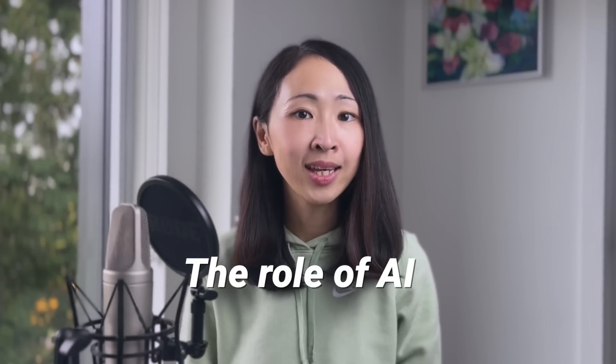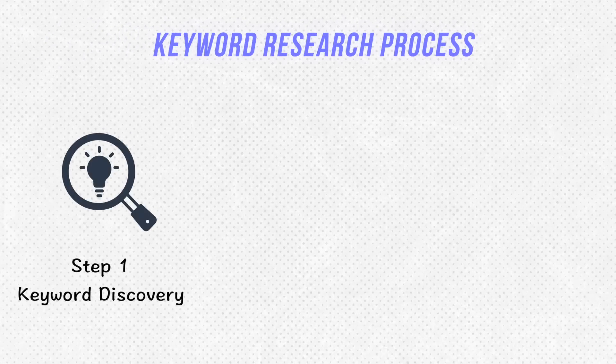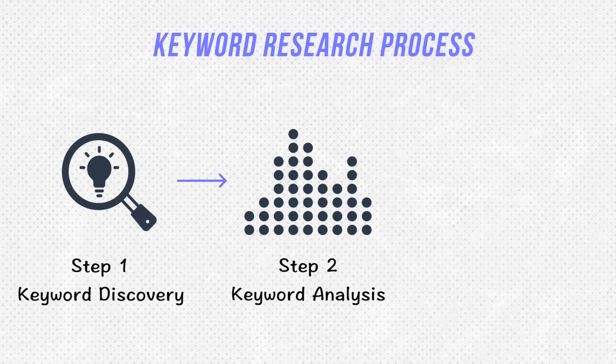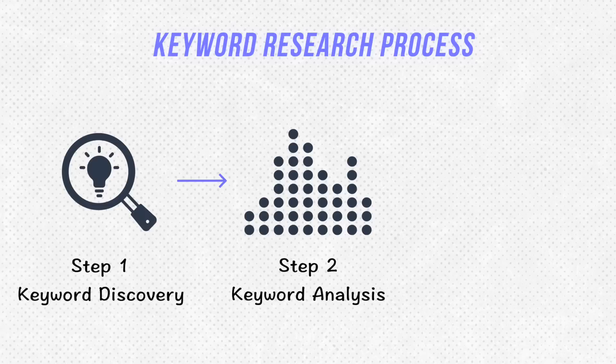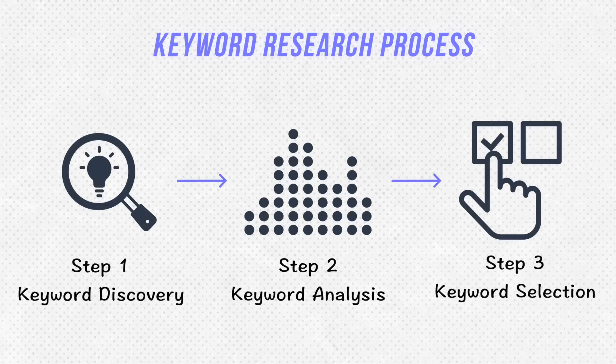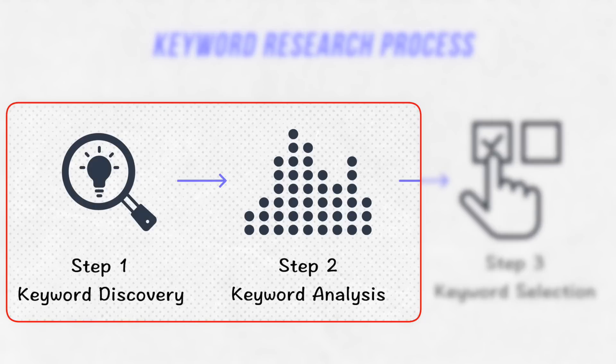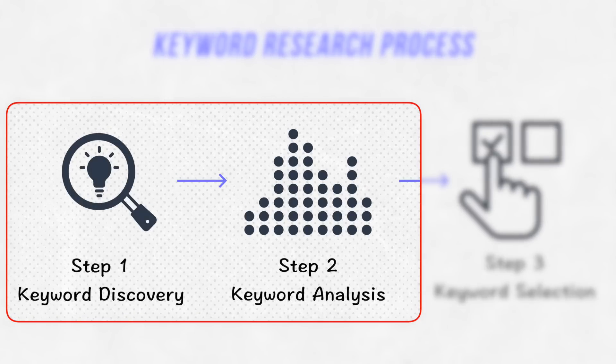As a bonus at the end, I'll also share how you can use Perplexity Spaces to manage your keyword research project. Before going into each use case, we must be clear about the role of AI in keyword research. A typical keyword research process covers three steps: number one, keyword discovery — brainstorming potential keywords with a seed keyword and building a keyword list; number two, keyword analysis — evaluating each keyword by doing competitive analysis like search volume, difficulty, and search intent.